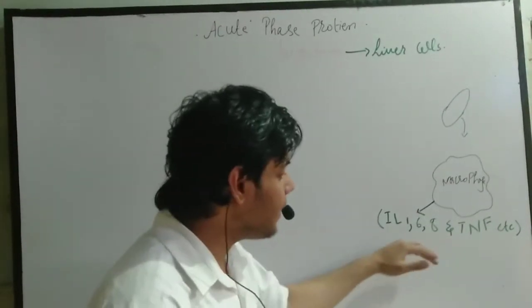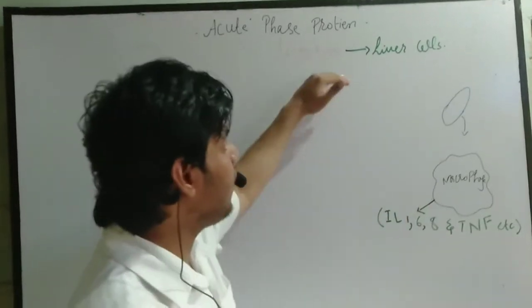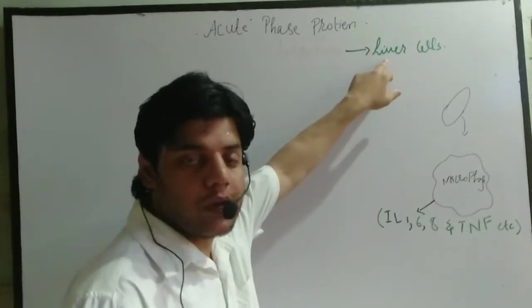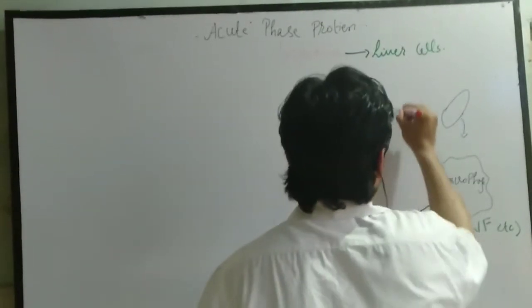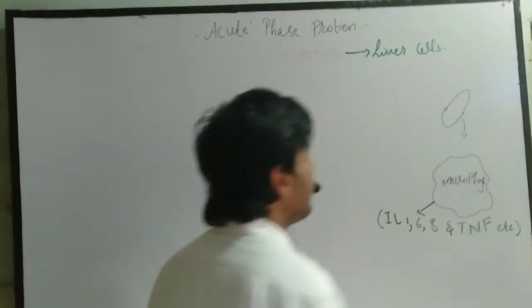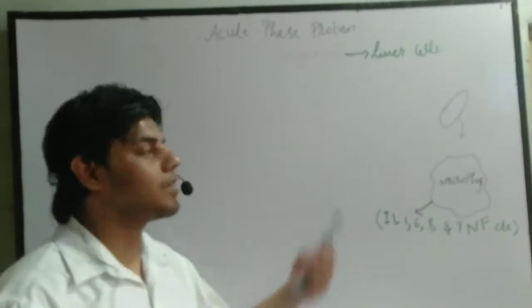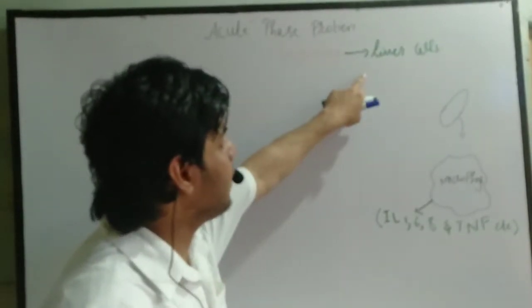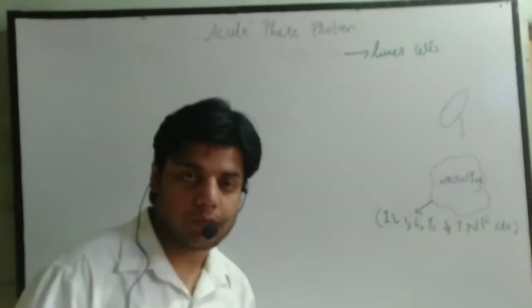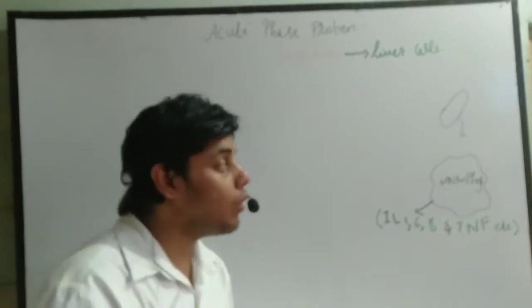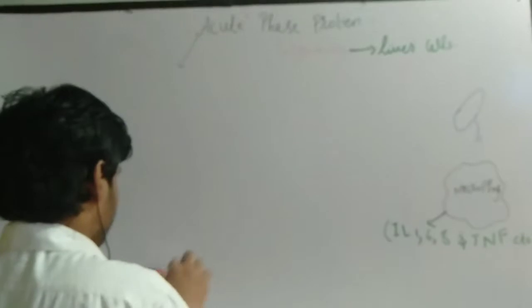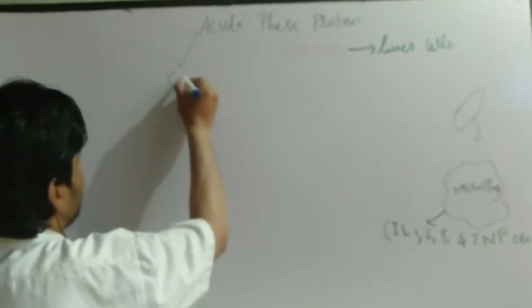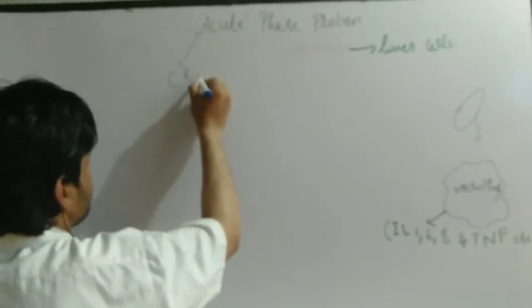Once these cytokines are released by the macrophages, these cytokines will activate or stimulate the liver cells. After some time the liver cell is activated and stimulated and they will release the acute phase proteins.